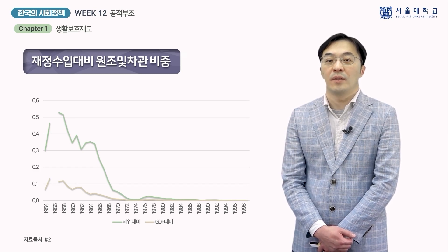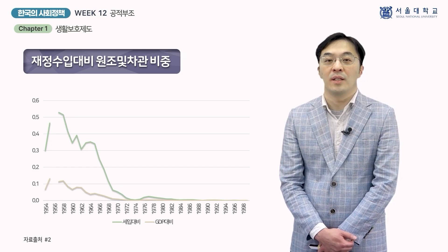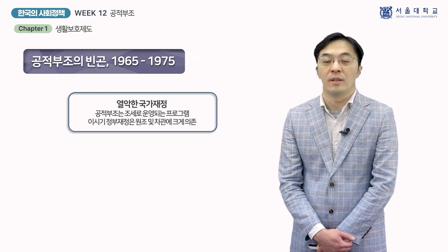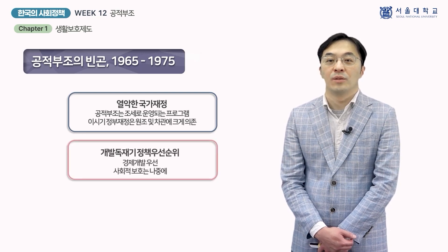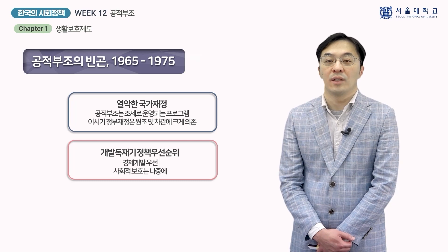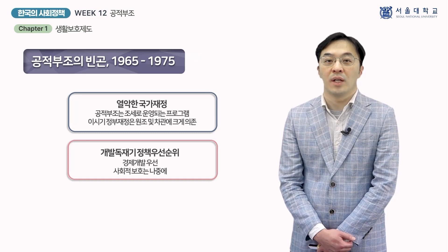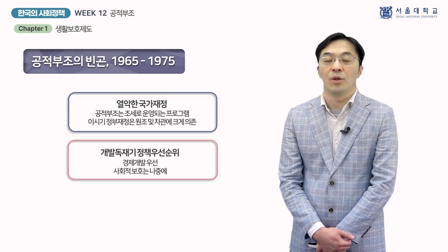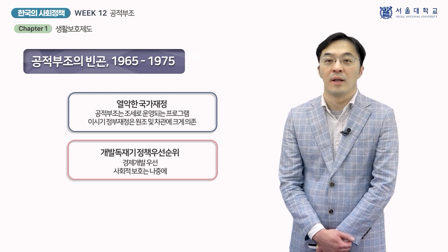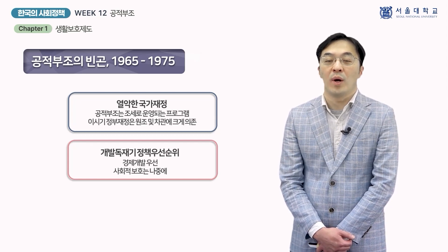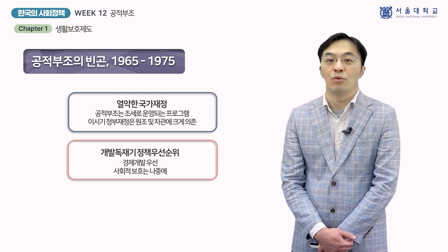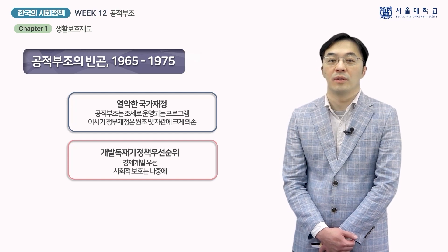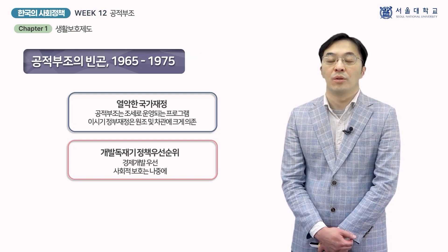원조 비중이 마침내 10% 아래로 떨어진 것은 1968년의 일입니다. 또 다른 이유는 정책 우선순위입니다. 1960년대와 1970년대 박정희 정부, 소위 개발독재의 1차적 목표는 사회보호가 아닌 경제성장에 있었습니다. 경제성장을 통해 빈곤에서 탈출하자는 것이었습니다. 그러한 전략에 따라 1965년 한일 국교정상화, 1960년대 말 베트남 파병으로 확보한 차관은 1960년대 후반 석유화학단지와 종합제철소 건설 등 중화공업화 투자에 우선적으로 사용되었습니다.